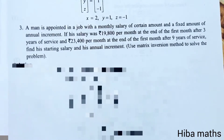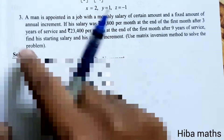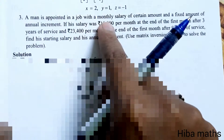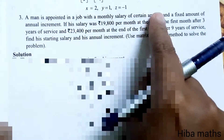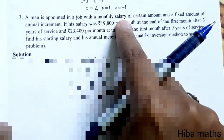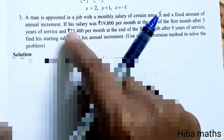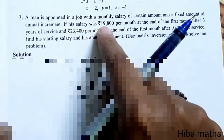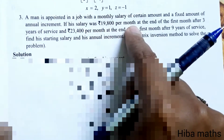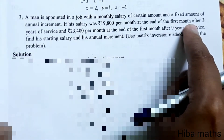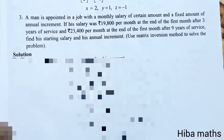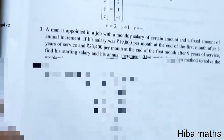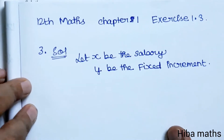Hello students, welcome to Hibamax 12 standard, Chapter 1, Exercise 1.3, third question. A man is appointed in a job with a monthly salary of a certain amount and a fixed amount of annual increment. Monthly salary is x and the annual increment is y. His salary was nineteen thousand eight hundred per month at the end of the first month after three years of service.